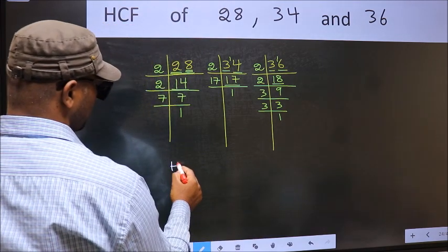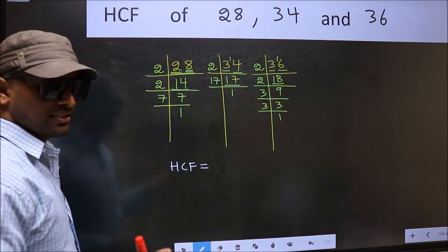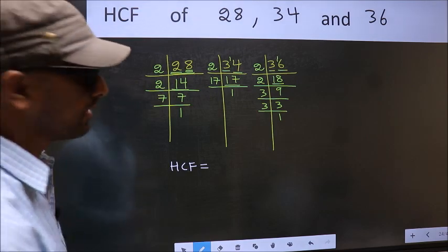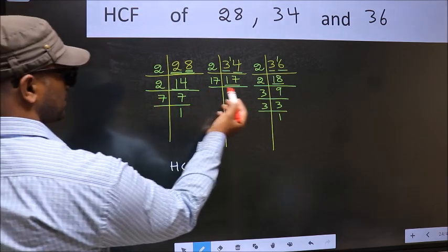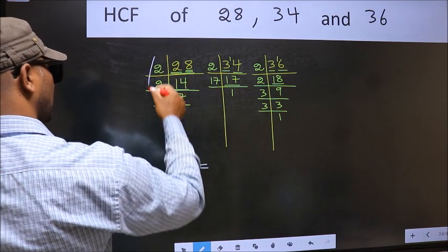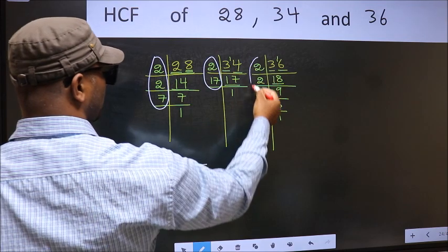Therefore, our HCF is - HCF is the product of the numbers which should be present in these 3 places, that is here and here and also here.